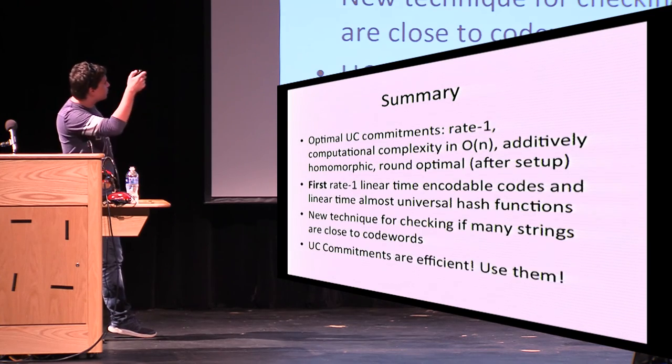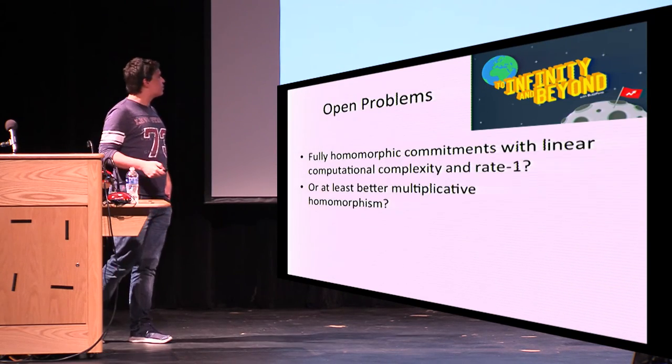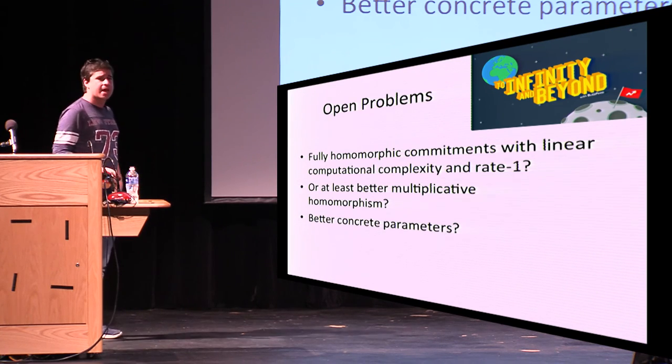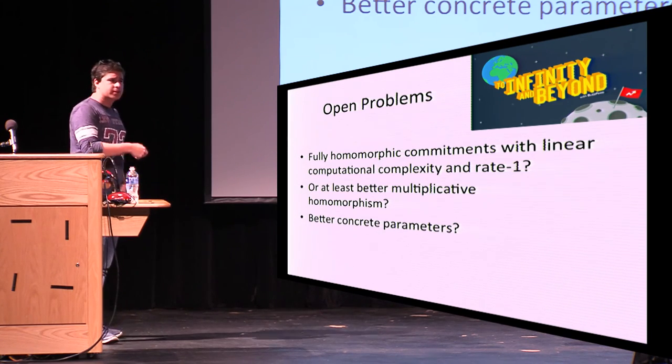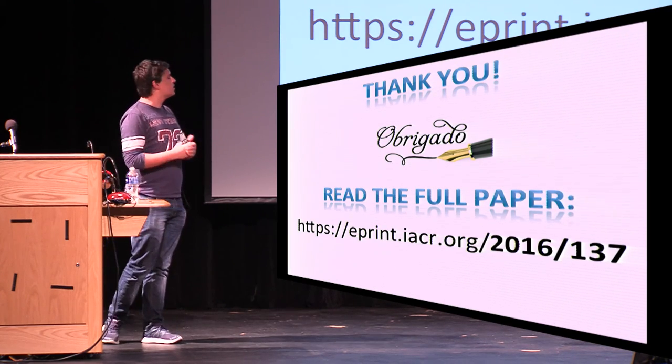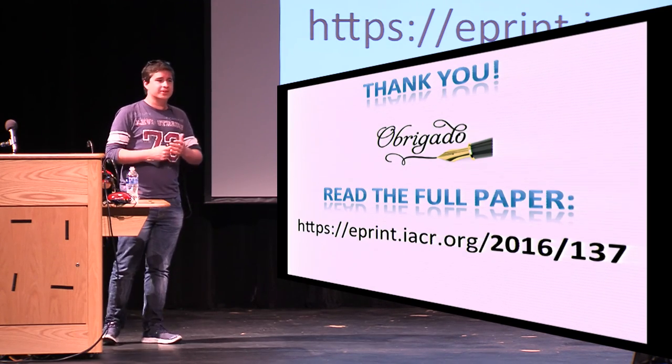So somewhere here, we have some open problems, how to actually get multiplicative homomorphism, basically, while maintaining our nice complexities, which we don't know how to do right now. Let's work on it, and thank you for your attention.